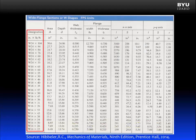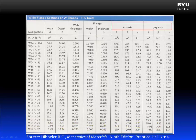The second number in the designation is the member weight in pounds per foot. This means that if you took a beam of the given section and cut off a one-foot length, it would weigh that amount — for example, the W24×104 would weigh 104 pounds. Also in the table, we find the properties of the cross section, such as the cross-sectional area, the actual depth, the thickness of the web, and the width and thickness of the flanges. The flanges in a W shape are both identical. Some additional properties are moment of inertia, section modulus, and radius of gyration.